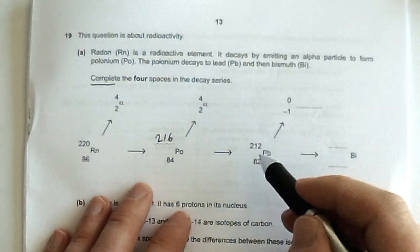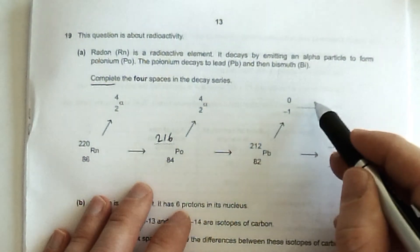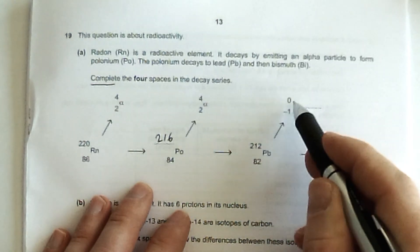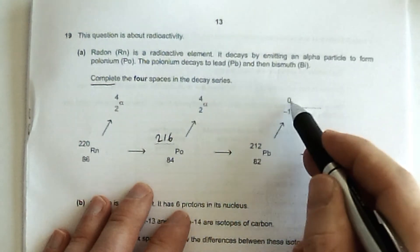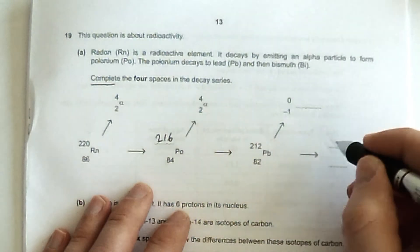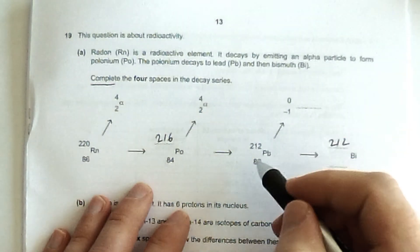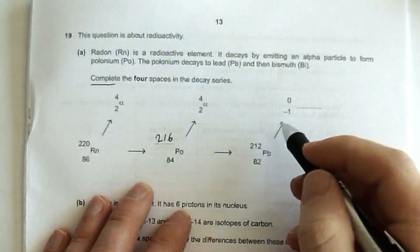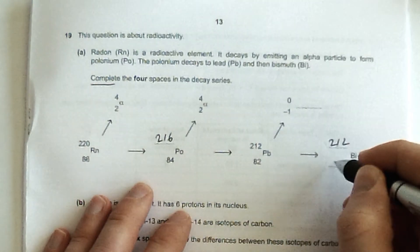Next one here, I don't know what's gone this way, but I do know the numbers. 212, so top-line balance, basically, and bottom-line balance. 212, take away 0, that's 212 as well. 282, take away minus 1, is 83.